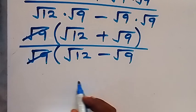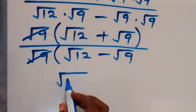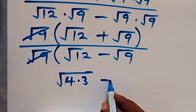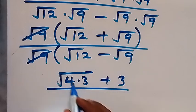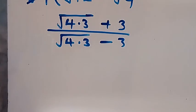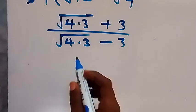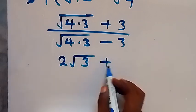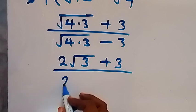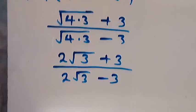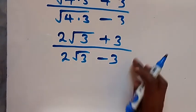We can write root 12 as root of 4 times 3, since 4 times 3 is 12, then plus root 9 which is 3, divided by root of 4 times 3, minus 3. From here we take root 4 out, and root 4 is 2, so we have 2 root 3 plus 3, divided by 2 root 3 minus 3.